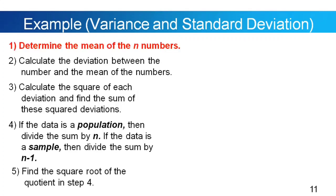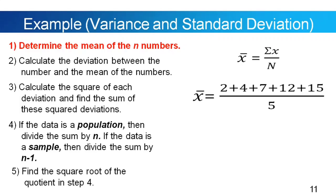Let's go to our solution. First, determine the mean of the n numbers using the formula: x-bar equals the summation of x values all over n. So x-bar equals (2 + 4 + 7 + 12 + 15) divided by 5, which equals 40 divided by 5. Our mean, mu, is equal to 8.